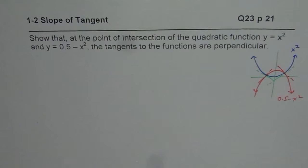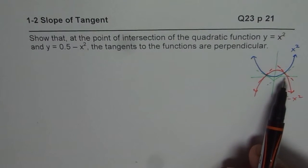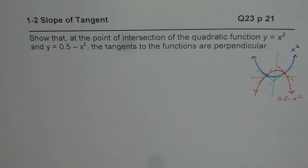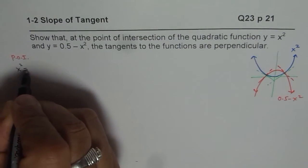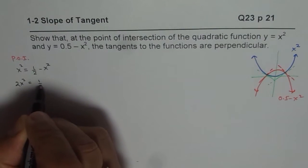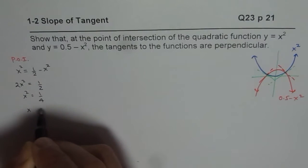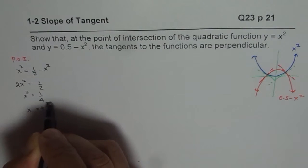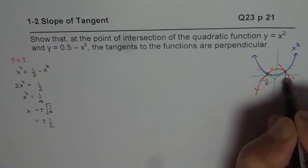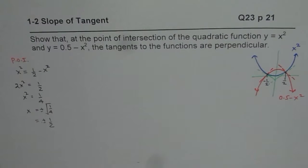We need to prove it — that is the question. So you can solve it by first finding the points of intersection and then finding the equations of tangents at those points. Let us find the point of intersection between the two graphs. Setting x squared equal to 0.5 minus x squared, we bring terms together to get 2x squared equals one half, so x squared equals 1 over 4, and x equals plus or minus the square root of 1 over 4. That gives us x equals plus or minus one half.